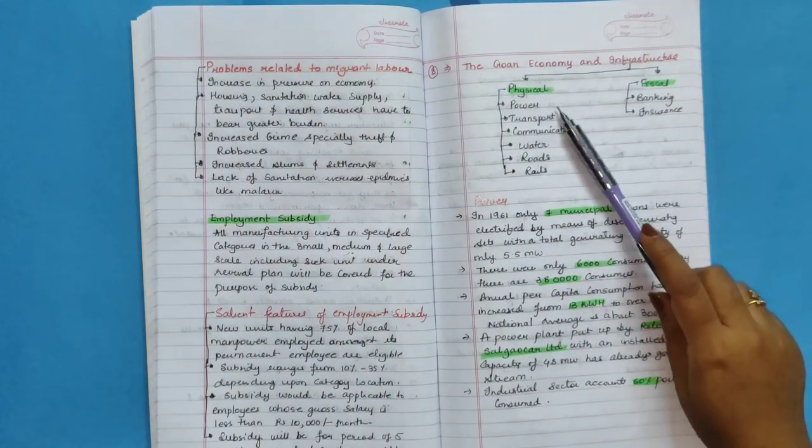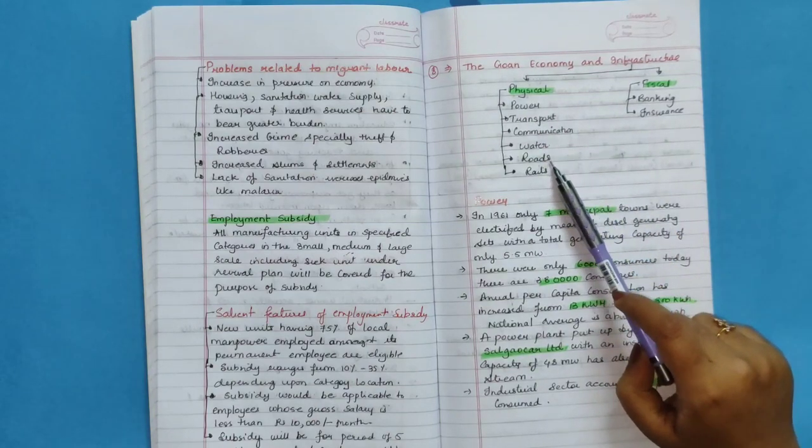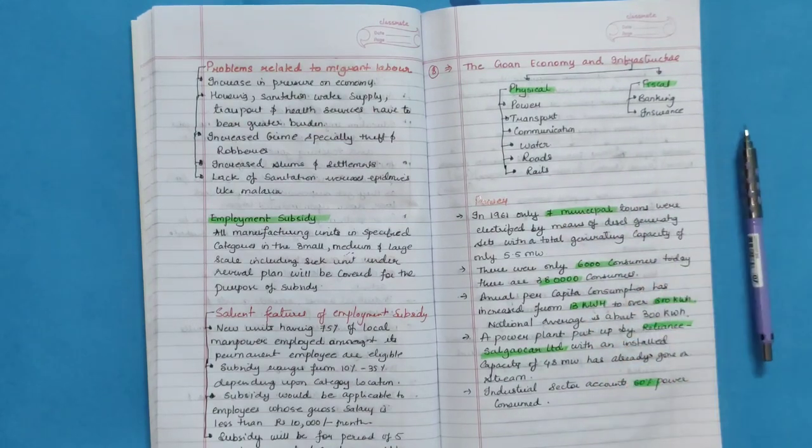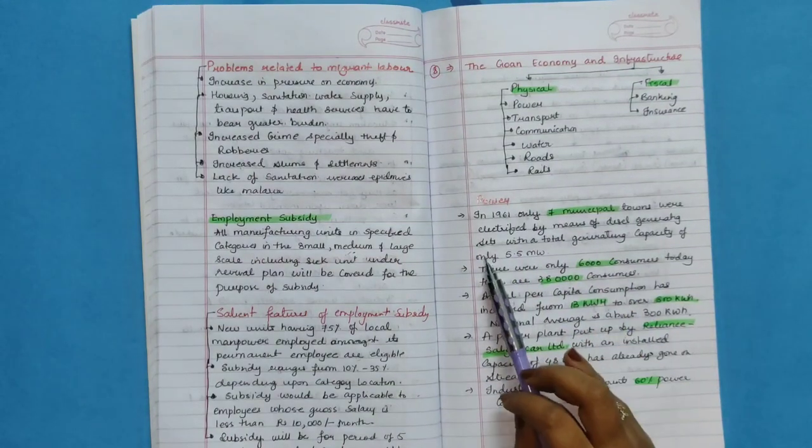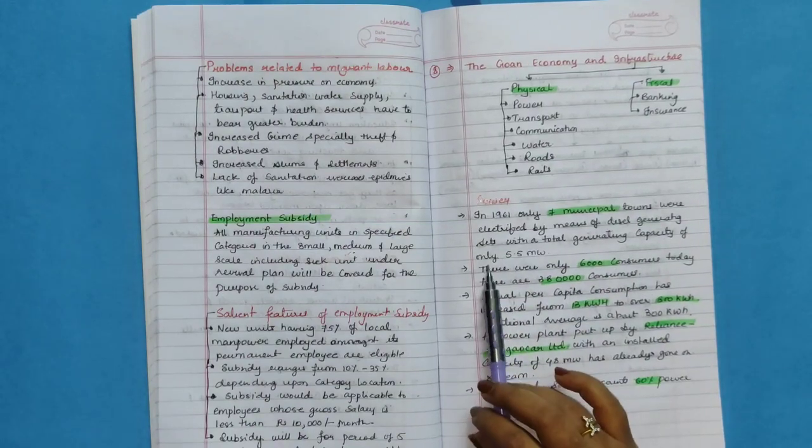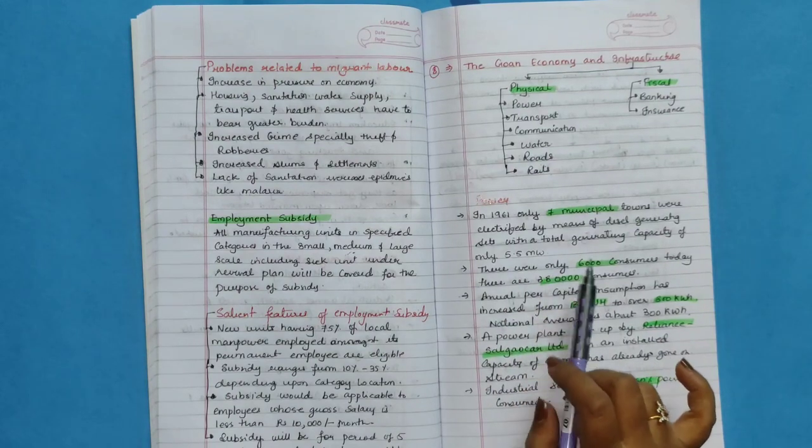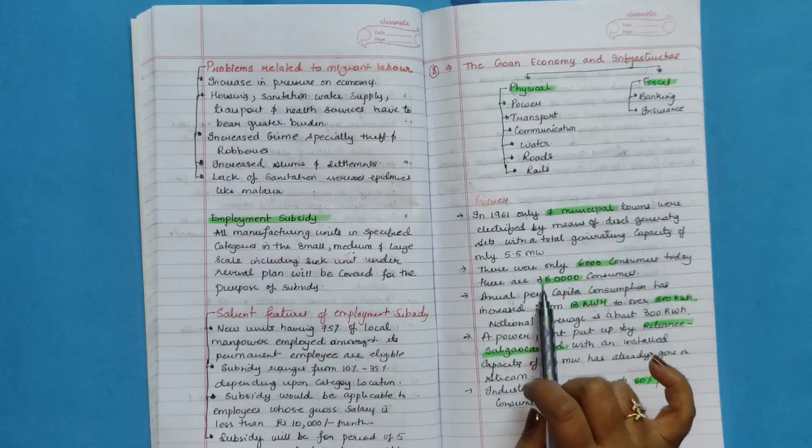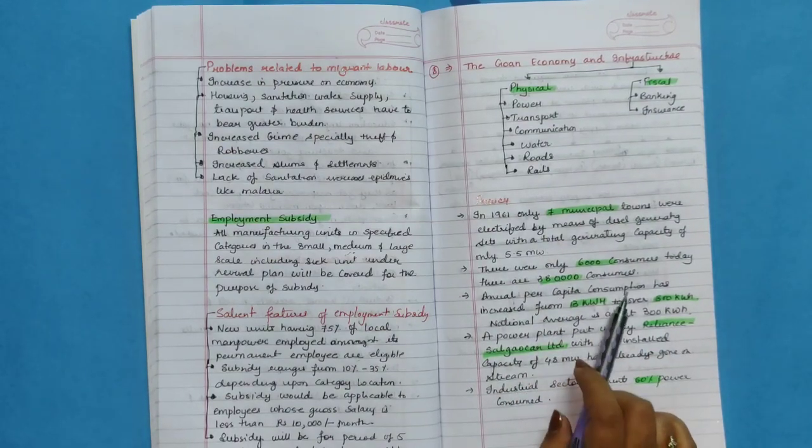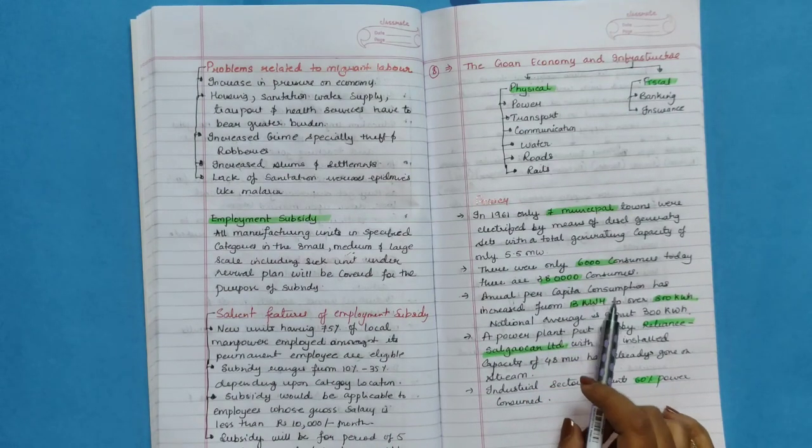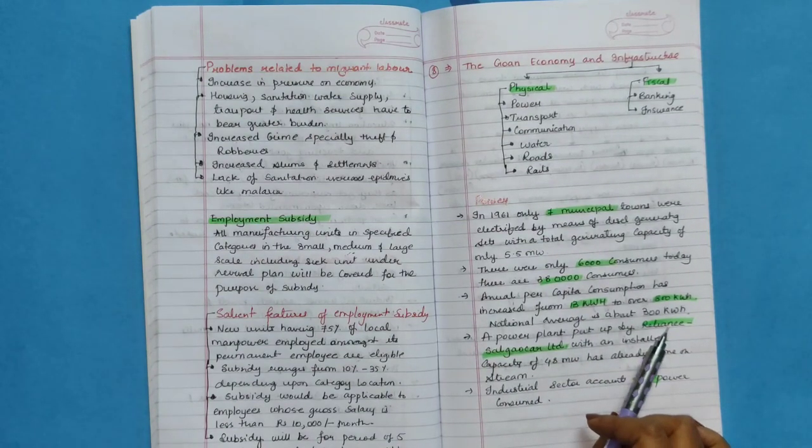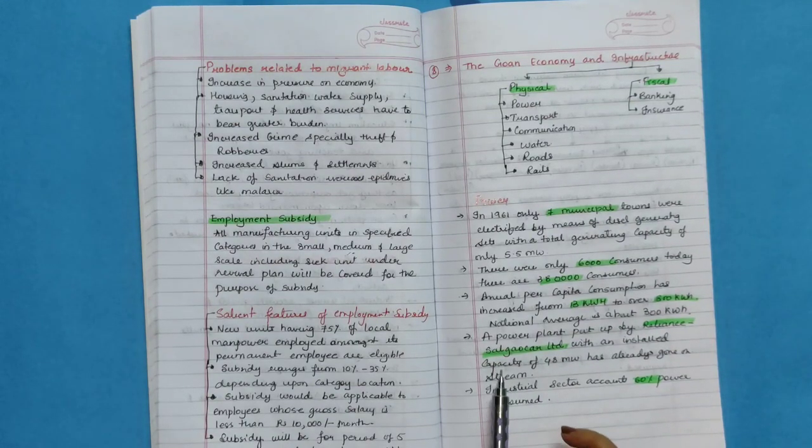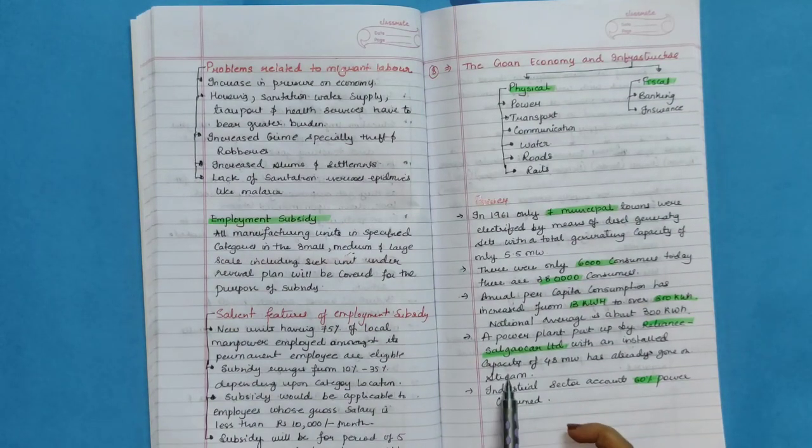Goan economy and infrastructure: physical and fiscal. Power, transport, communication, water, roads, rail. And fiscal: banking and insurance. Power. In 1961, only 7 municipal towns were electrified by means of diesel generating sets with a total generating capacity of only 5.5 MW. There were only 6,000 consumers. Today, there are 3,80,000 consumers. Annual per capita consumption has increased from 13 kW to over 800 kW. National average is about 300 kW. A power plant put up by Reliance Salgaocar Limited with an installed capacity of 48 MW has already gone on stream. Industrial sector accounts 60% of power consumed.